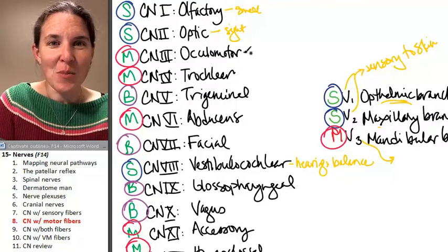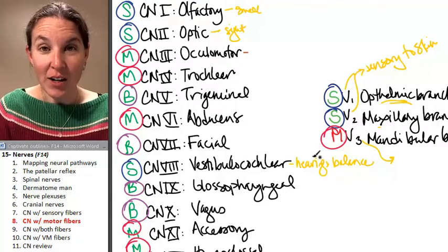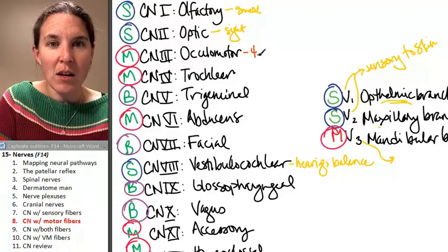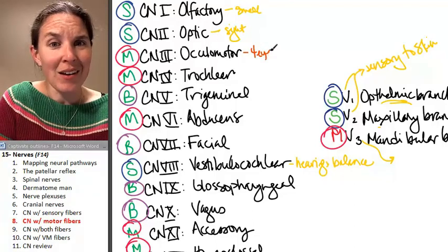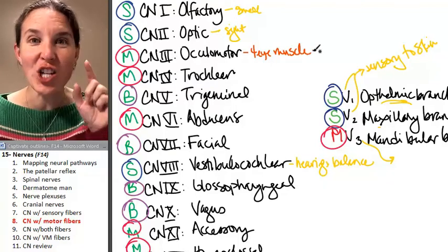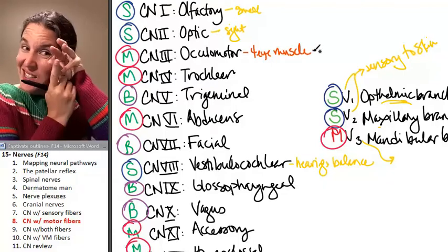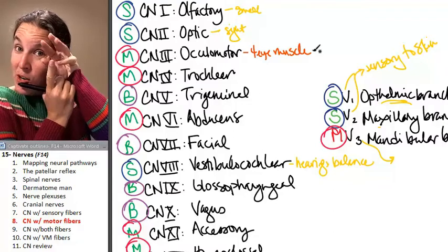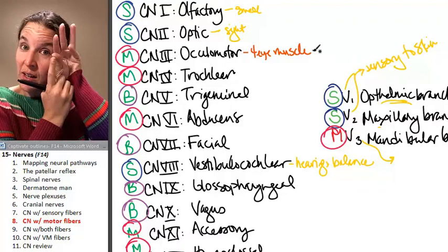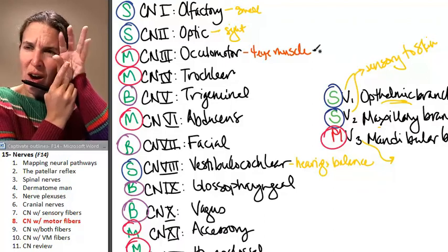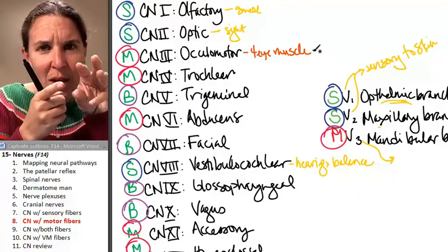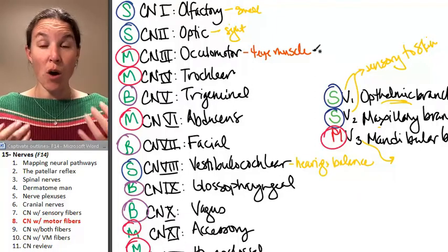The first one is oculomotor. Oculomotor tells four eye muscles to do their thing. And we will learn, it's really cool, each eye has six eyeball muscles attached to the eye, and they contract in varying combinations and move your eye all around your socket. There's only six of them in there, and we're going to learn all those eye muscles.